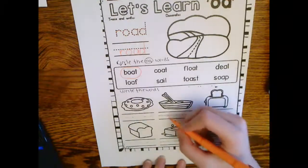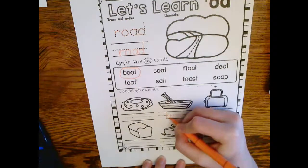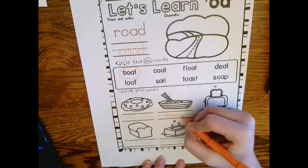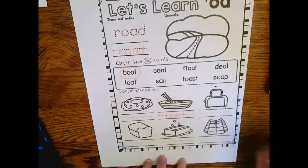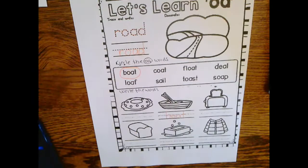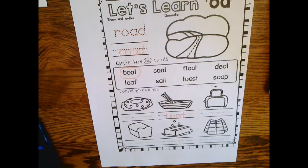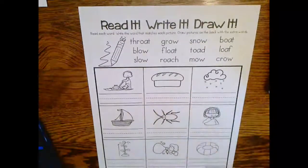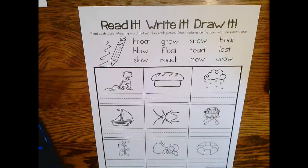Boat goes with this picture, so then you're going to write boat on the line there. Do that for the rest of the words. When you're done with this side, flip it over to the read it, write it, draw it. On this page you're going to read the words and then write the word that matches with the picture.